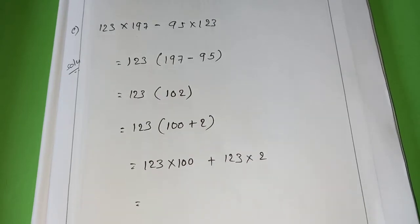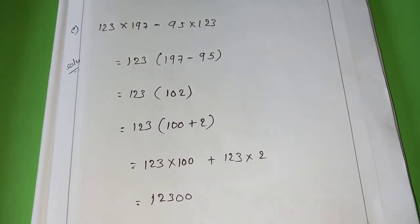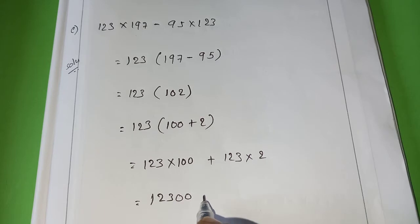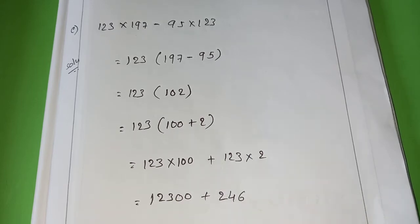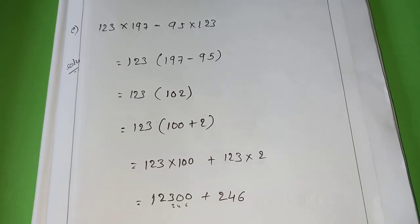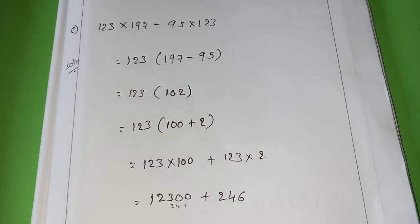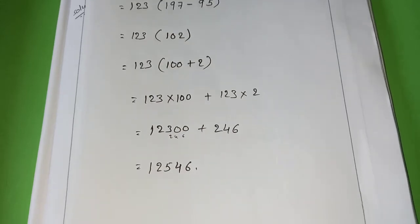Now, 123 into 100 plus 123 into 2. It is easy to multiply, instead of with 123 directly. 12,300 plus 246. Now, add these two. If you add 246, the answer will be 12,546. That is the answer. Understand how to do? Like this, you have to do remaining by your own.